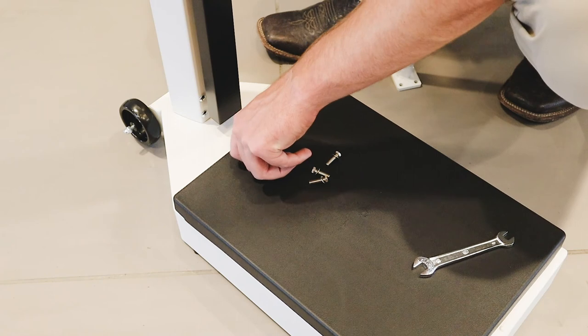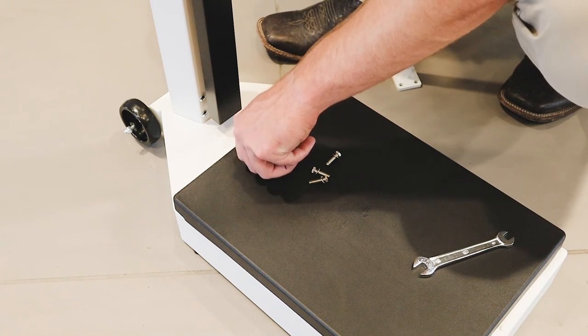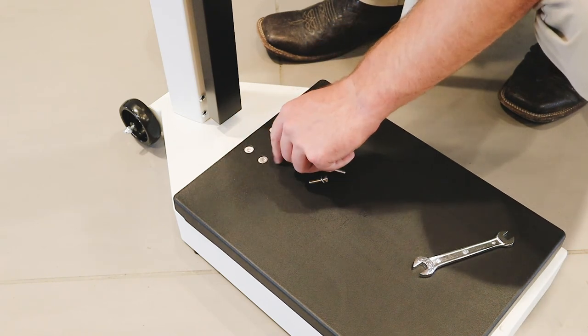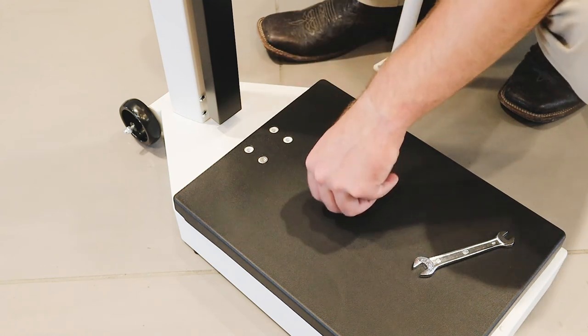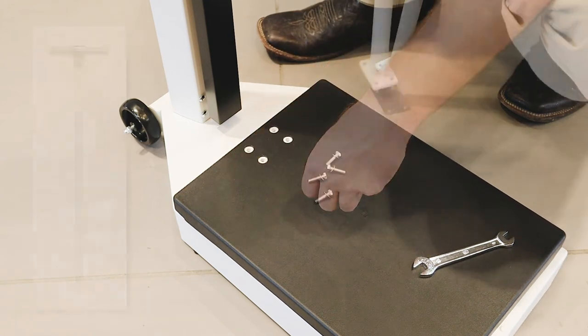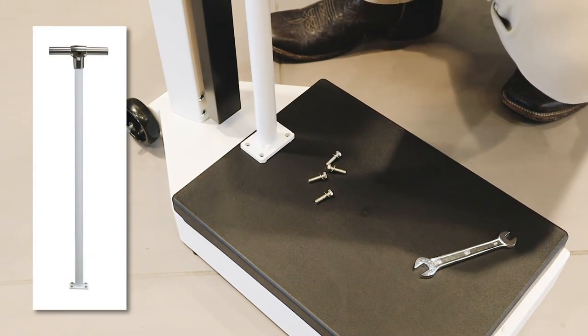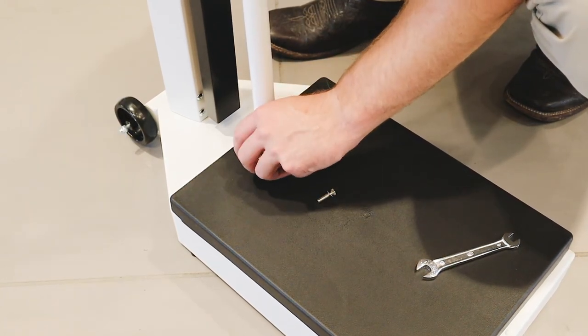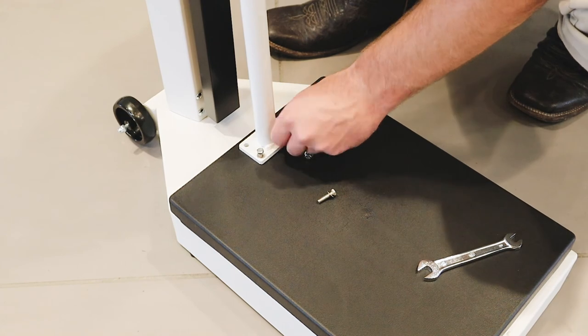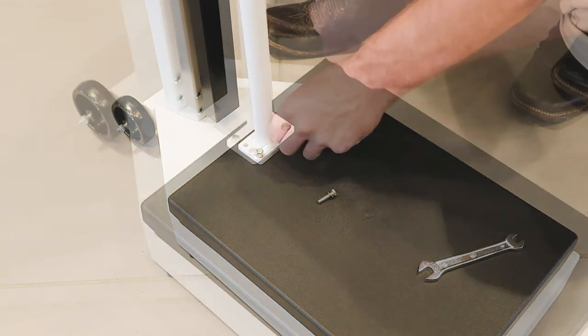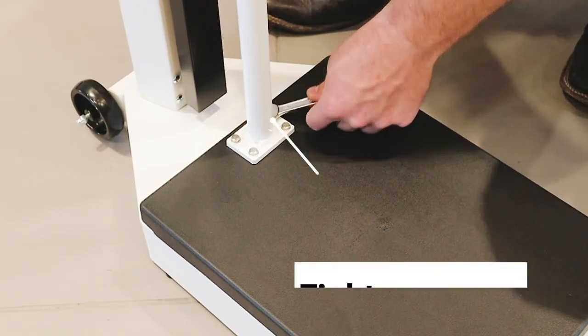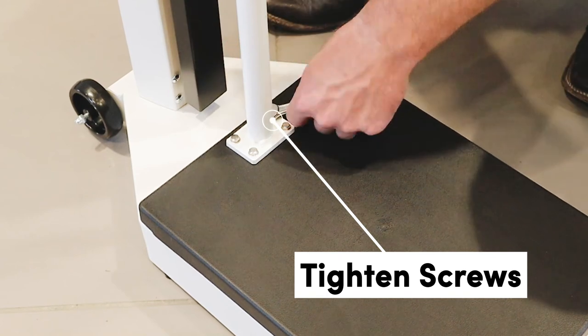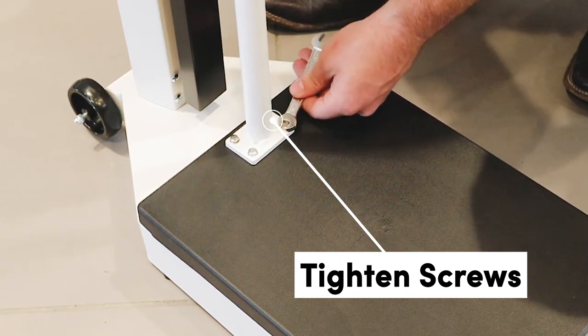If your scale is a model that includes the hand post, remove the four hex head screws and washers from the scale platform and set them aside. Place the hand post onto the scale platform, align the holes in the hand post with those in the scale platform and then install and finger tighten the four hex head screws and washers. Using the provided wrench, tighten all four hex head screws to secure the hand post to the scale platform.